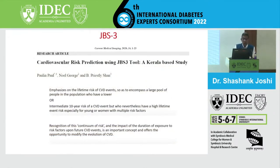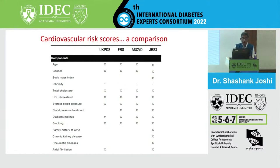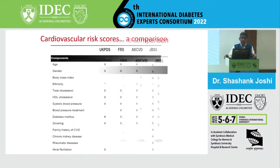Kerala data from Pauline Paul, published in 2020, clearly showed on JBS3 that if you look at lifetime cardiovascular risk score or intermediate 10-year risk score in our population, there is a risk continuum in Indians. Comparing all risk scores - UKPDS, Framingham, atherosclerotic cardiovascular risk engine, JBS3 - age and gender are consistent, BMI is only in the Indian component, and whether triglycerides or other factors belong there, we don't have adequate data yet.